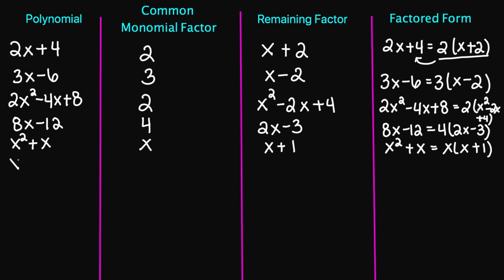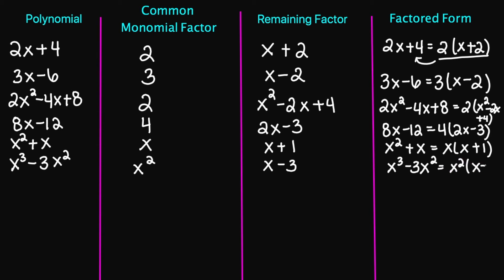Let's try x cubed minus 3x squared. My common factor is going to be x squared. If I factor out an x squared, I'll be left with x minus 3. So your factored form is going to be x cubed minus 3x squared equals x squared times x minus 3.